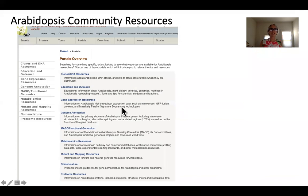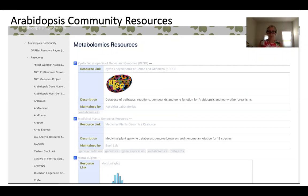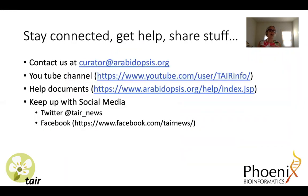TAIR is part of a large ecosystem of plant biology resources. Under the portals section we have links to various types of resources, and if you click on metabolomics resources for example you'll see a list of useful tools. If you see something that would be of interest to the broader plant biology community, we encourage you to share it with us and we'll make it available through these resource pages. If you have questions that don't get answered in this webinar, please contact us at curator. We also have a YouTube channel with additional resources.